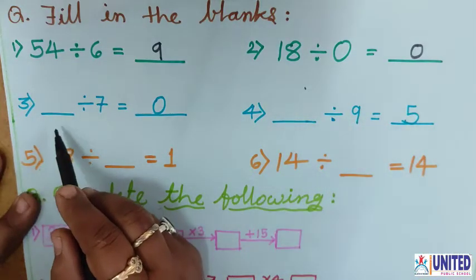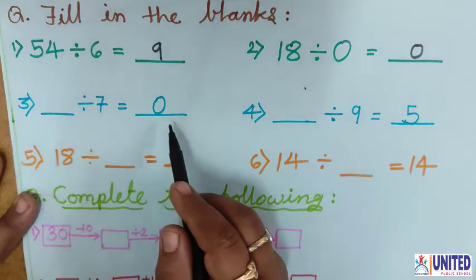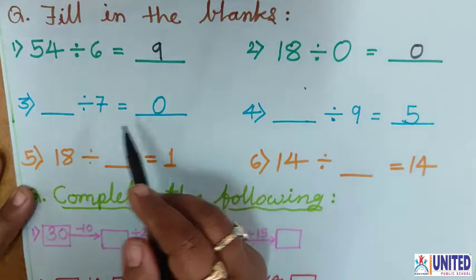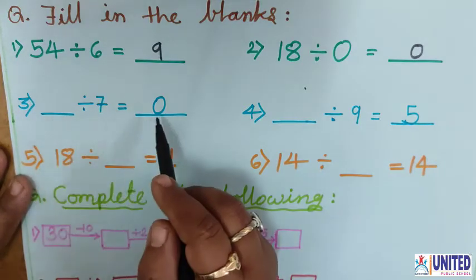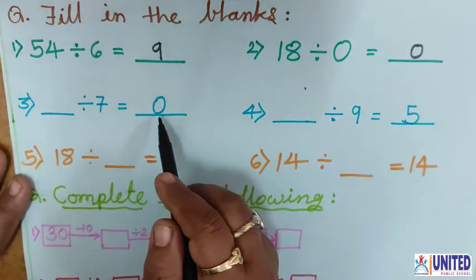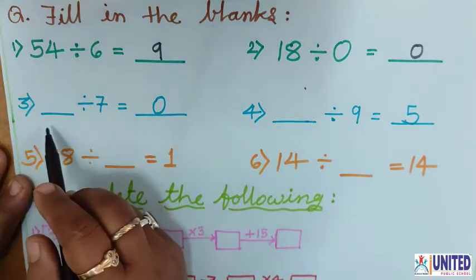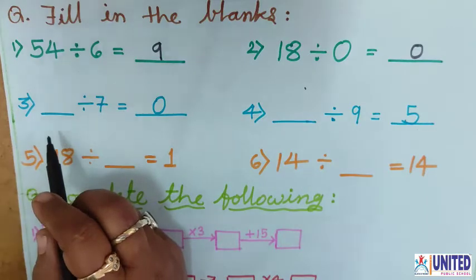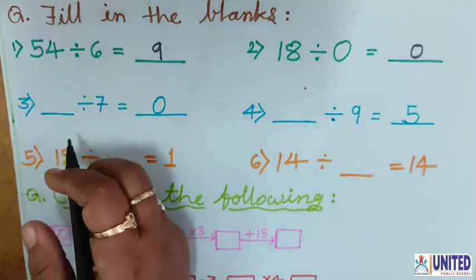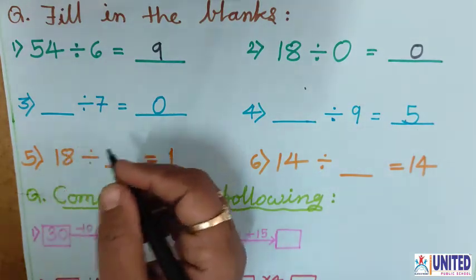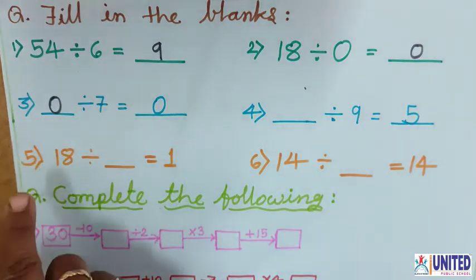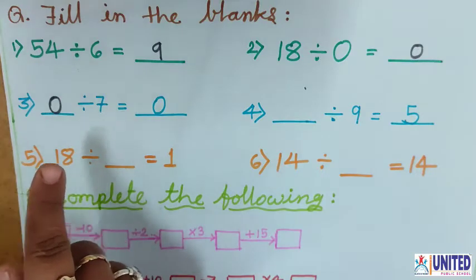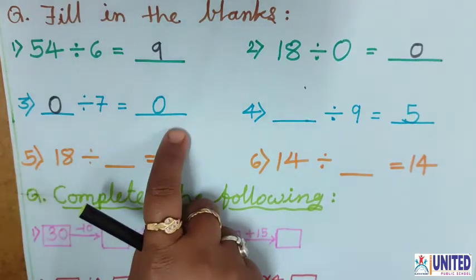Now number 3: blank divided by 7 equals 0. Here the dividend is absent, so you have to find the dividend. The answer is 0. When the answer is 0, the dividend is also 0. So I write 0 here. If we divide 0 by any number, the answer is also 0.